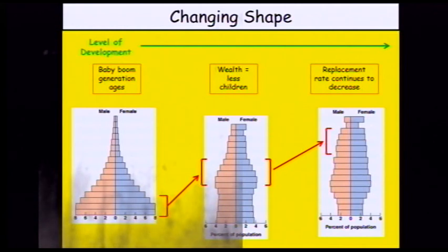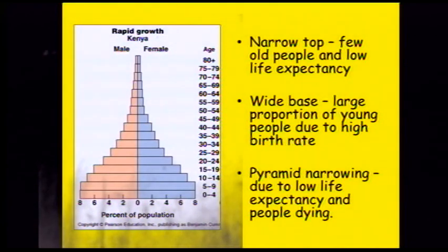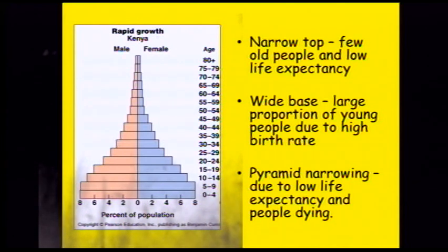This is an example of population pyramids. We've got three examples here and they are slightly different, related to the level of development just as the demographic transition model is. The first one has a very wide base narrowing towards the top — this is an example of Kenya. The narrow top means very few old people and a very low life expectancy. The wide base suggests a large proportion of the population is very young, with a very high birth rate, and the pyramid narrows due to people dying.